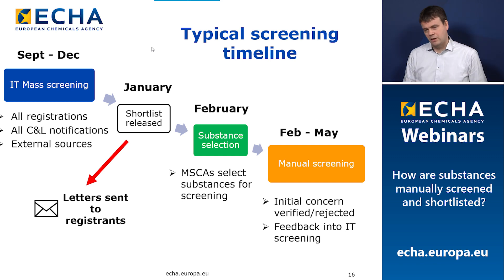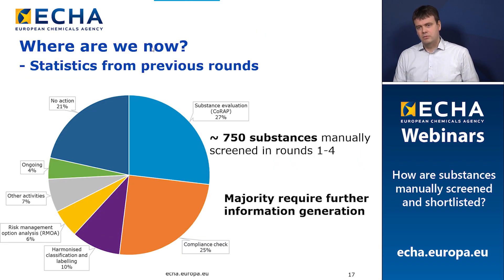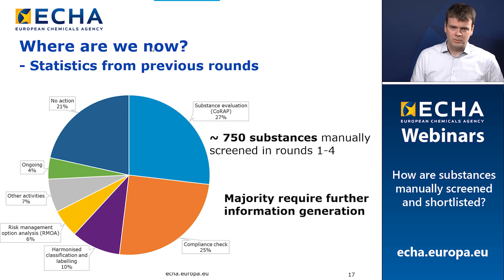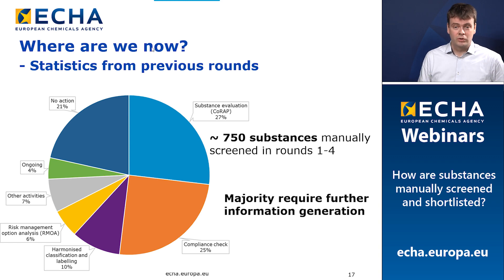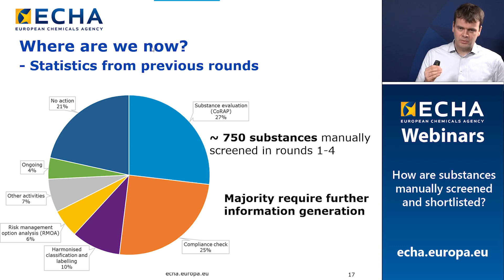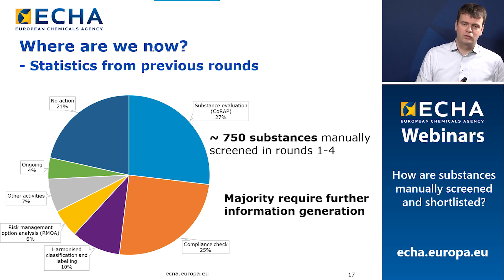Quite a lot of work has been done over the last four rounds. Member states have manually screened about 750 substances. About a fifth of those have concluded with no action, so they are currently of low priority for further work. The majority, albeit a slim majority, seem to require further information — they go roughly 50/50 either to substance evaluation or dossier evaluation. Some substances can go straight to risk management without this generation of further information.